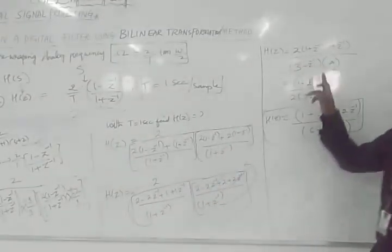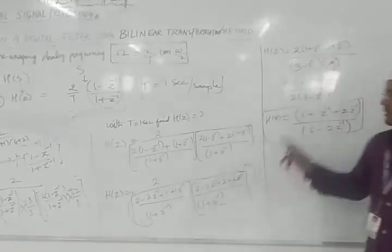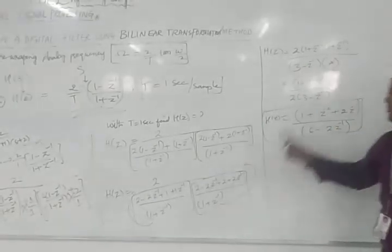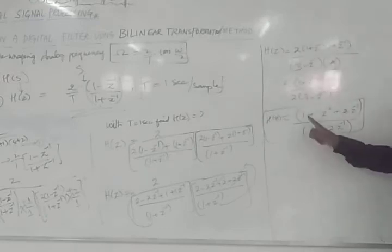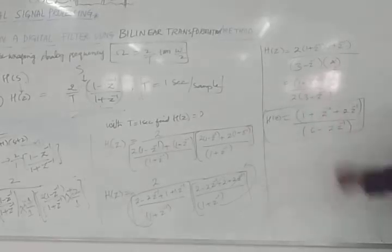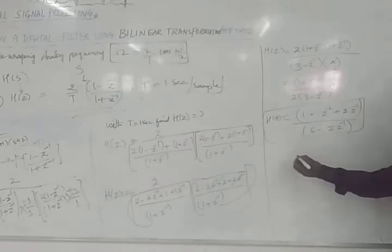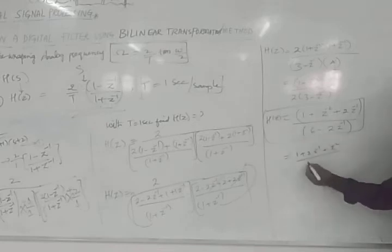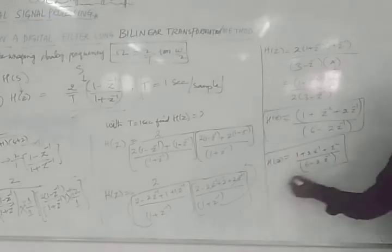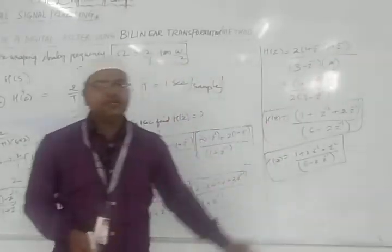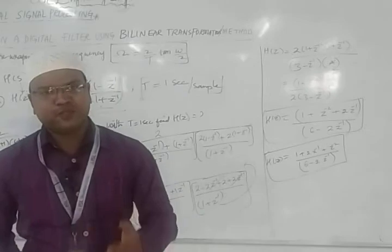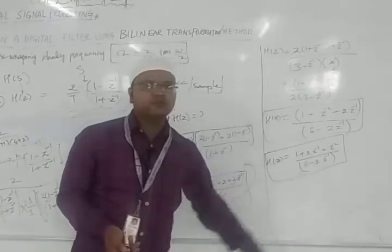Expanding (1+z⁻¹)² = 1 + 2z⁻¹ + z⁻², the final answer is H(z) = (1 + 2z⁻¹ + z⁻²) / (6 − 2z⁻¹). This is H(z) obtained from H(s) = 2/[(s+1)(s+2)] using the bilinear transformation with T = 1 second.